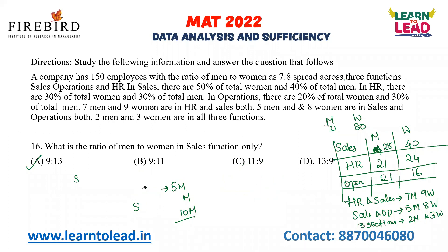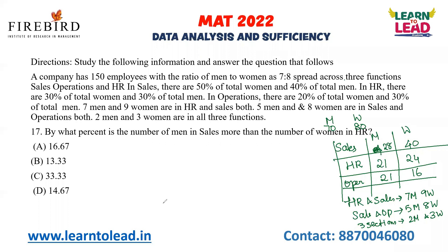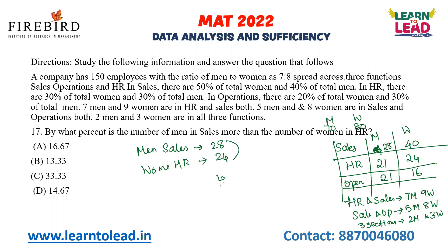By what percent is the number of men in sales more than the number of women in HR? Number of men in sales is 28, number of women in HR is 24. The difference is 4. So 4 by 24 into 100 equals 1 by 6, which is 16.667%. This is your answer.